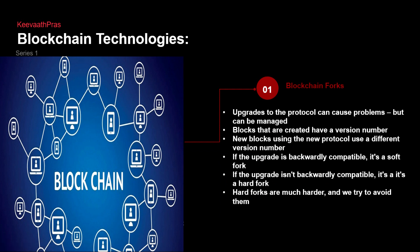What is a blockchain fork? Like every software code that goes through development and upgrades, upgrades are made to the protocols and they can be managed. Everything has a version number — this is what is called a fork. New blocks created using the new protocol will use a different version number. If the upgrade is backward compatible — say I have version 1 and version 2 and version 2 is compatible with version 1 — when we release a new version, we have to make sure the previous version is compatible with the buttons, look and feel, and everything.